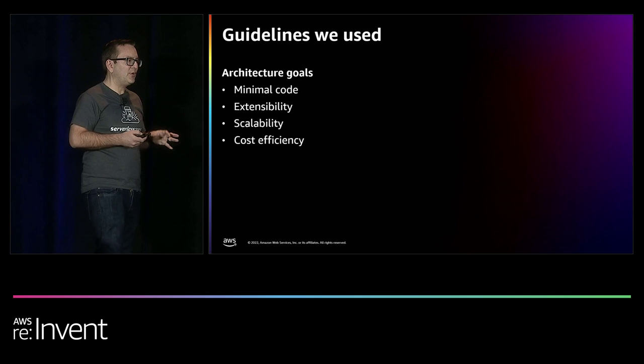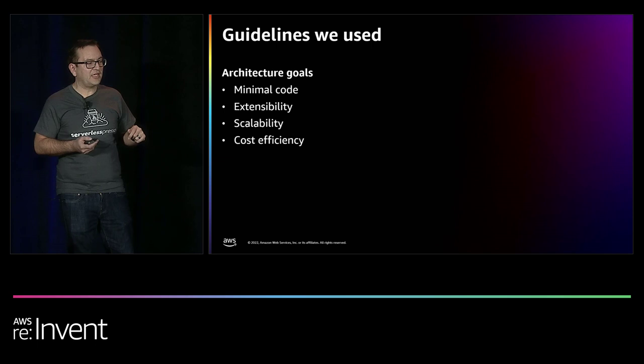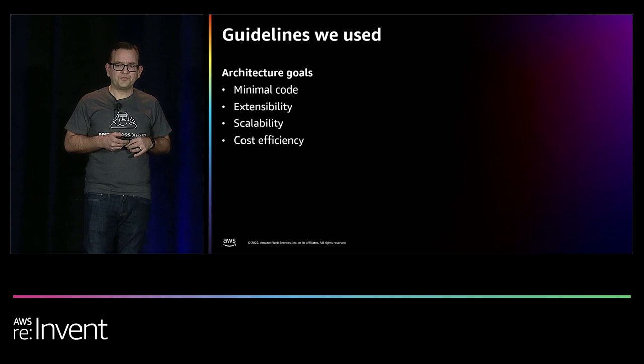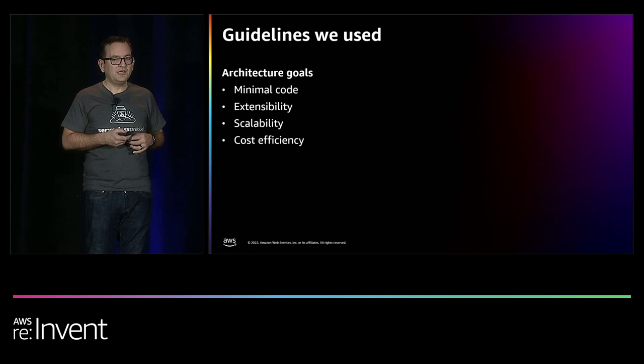We sat down with the team and came up with some guidelines about what we needed when building this application. We knew we needed minimal code, because code is a liability — most applications with less code are easier to maintain. Extensibility was important because when we built this during the pandemic, I didn't really know what it needed to do, so as we've done more events we've changed the functionality. Being able to add and change what the application is capable of is really important.